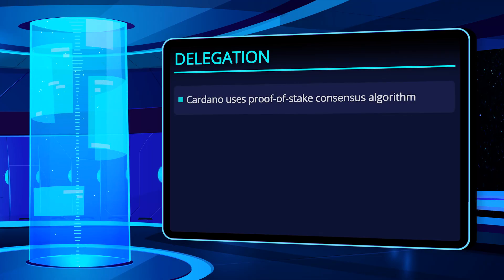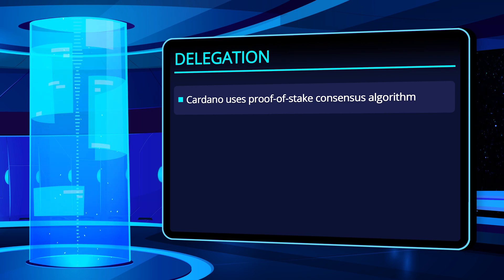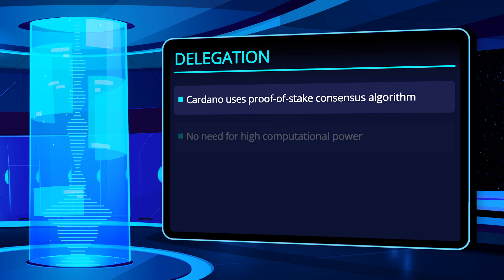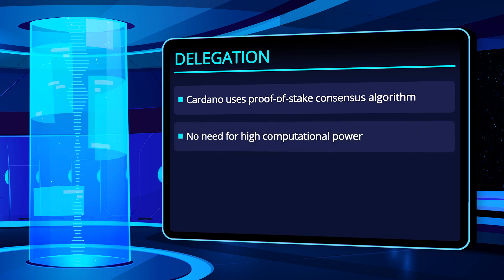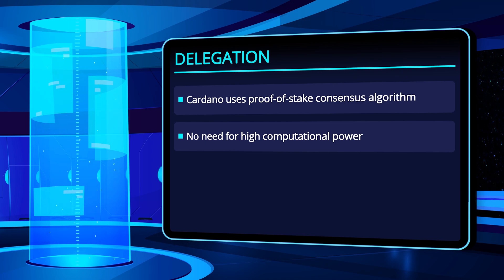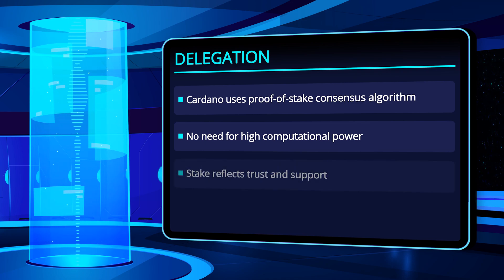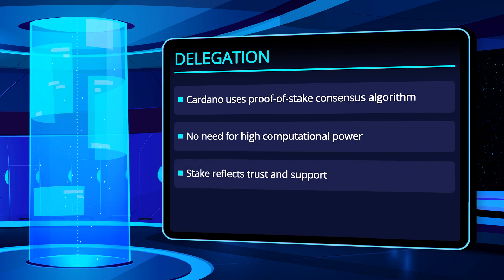Cardano uses a so-called proof of stake procedure. In contrast to Bitcoin or Ethereum, the blockchain is not created through the use of computing power, but as the name suggests, by the so-called stake of the mining pool. The stake is a value that expresses the trust and support of ADA coin owners in a mining pool.